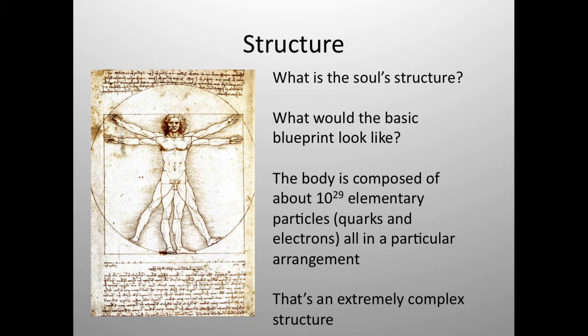So if we were to have a basic blueprint of the soul, what would that look like? And we know, first of all, that it's got to be very, very complex. So depending on what level we're wanting to look at, if we're going to look down to the level of elementary particles, well, there are about 10 to the 29th power elementary particles, that's quarks and electrons, in a body. And those are all in some particular arrangement at any given time. That's an extremely complex structure.